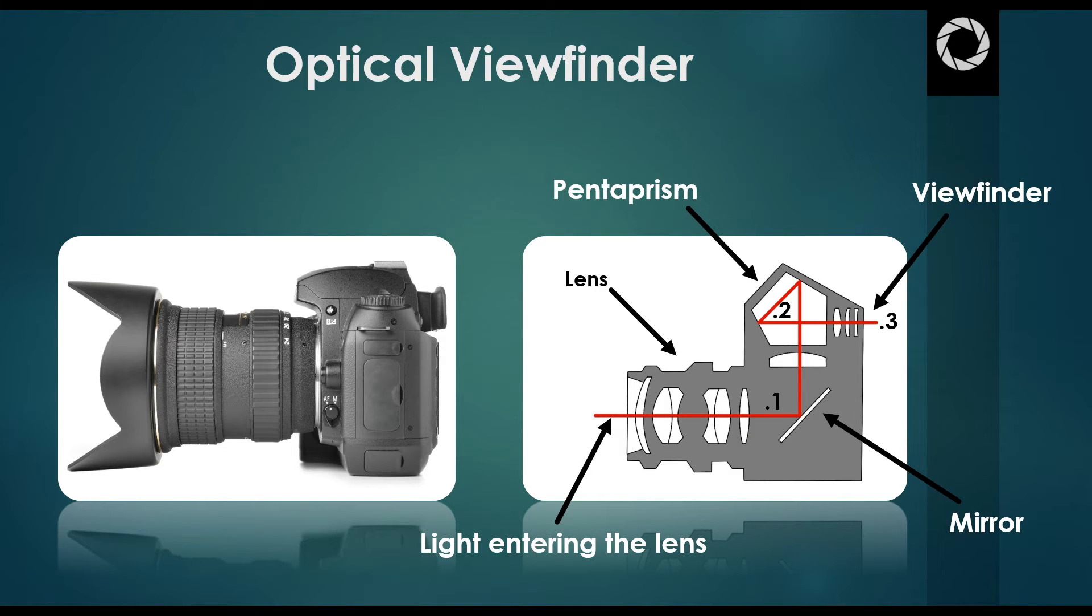Just to recap, light or the picture enters the lens, hits the mirror inside the camera body, and it's redirected upwards into the pentaprism. It bounces around inside the pentaprism until it exits through the viewfinder. This is what allows you to see straight through the camera's lens when you put the camera to your eye, or your eye to the viewfinder.